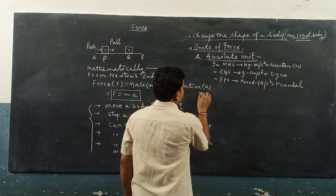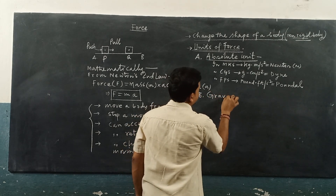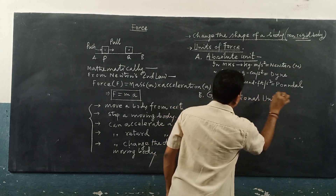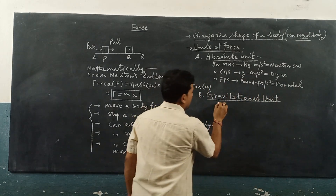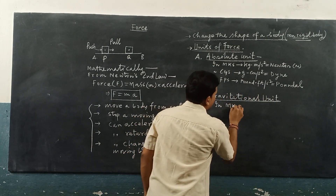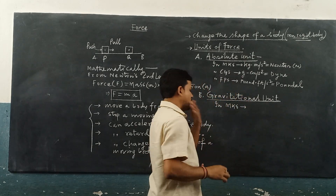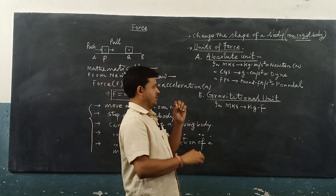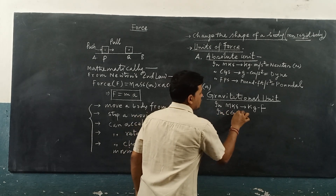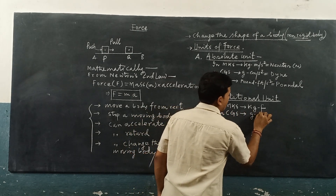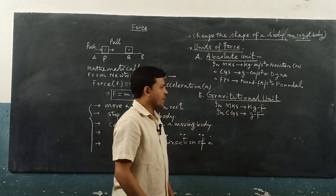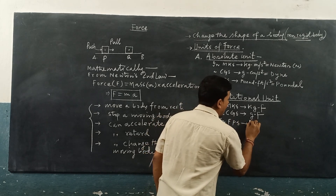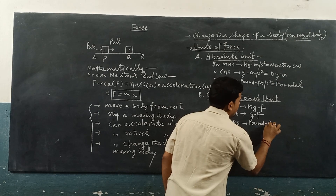In gravitational units, in MKS it is kilogram-force (kgf), sometimes also written as kilogram-weight. In CGS it is gram-force. In FPS it is pound-force.